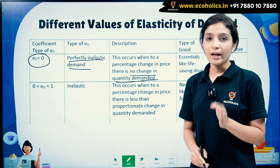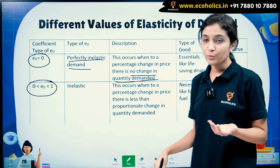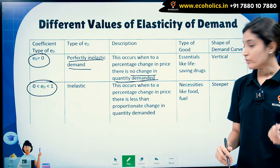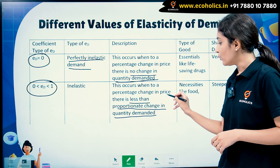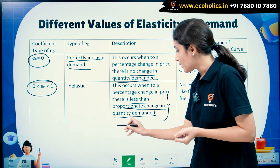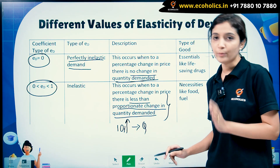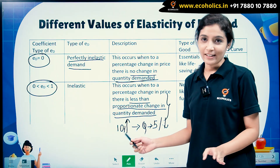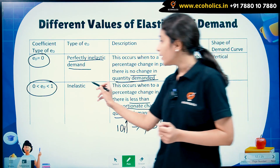The next case is when price elasticity of demand lies between 0 and 1. This occurs when, to a percentage change in price, there is a less than proportionate change in quantity demanded. For example, if price increases by 10% but quantity demanded falls by only 5%, the quantity demanded changes by a smaller proportion than price. In this case, the demand is inelastic.